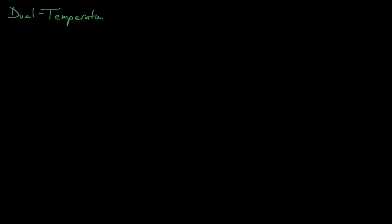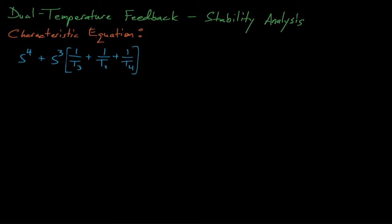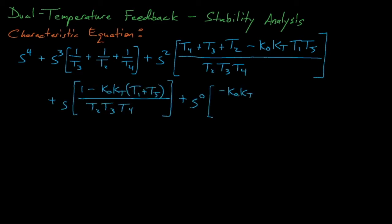Now that we've developed an expression for our reactor's feedback transfer function with dual temperature feedback, let's analyze the stability of a reactor with dual temperature feedback. If we analyze the control block diagram and develop an expression for its transfer function, we find that our system's characteristic equation equals a fourth-order polynomial of s, where the polynomial's coefficients are a complicated combination of our t, k0, and k_t terms.